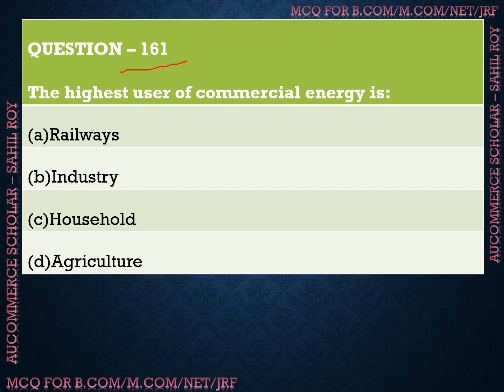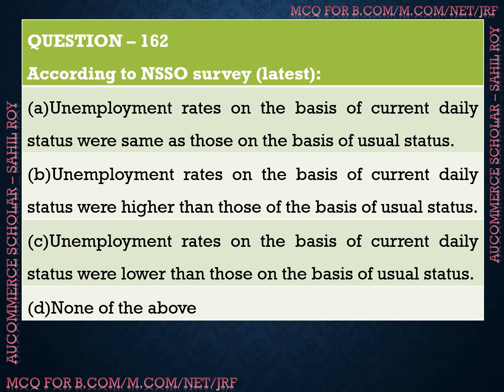Question number 161: The highest user of commercial energy is? We have four options: Option A is railways, Option B is industry, Option C is household, and Option D is agriculture. The correct answer is Option B — industry. Commercial energy essentially means electricity used for profit-making purposes, and the industry sector is the highest user of commercial energy.